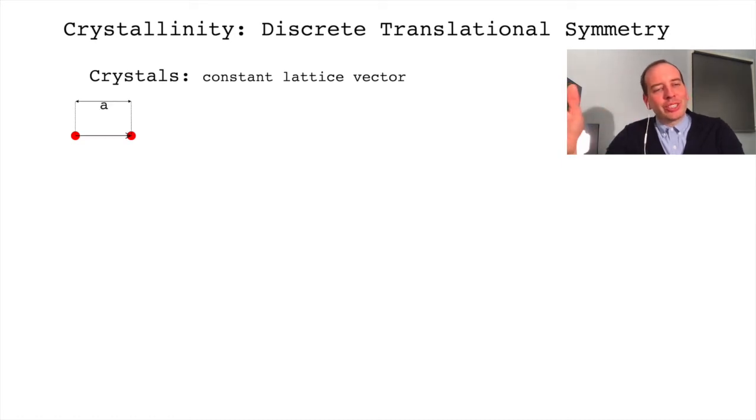So it's discrete translational symmetry that defines crystalline order. For crystalline order, we have a unit cell that's connected to an adjacent unit cell by a lattice vector. And the next nearest neighbor is connected by the same lattice vector. And we can indefinitely describe the positions of any two unit cells through an integer multiple of these lattice vectors.